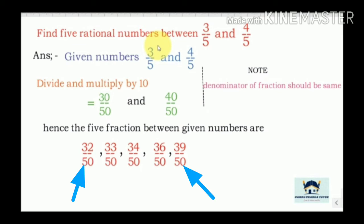Now let us take one more example. Find five rational numbers between 3/5 and 4/5. Using the same method, multiply and divide by 10/10: 3/5 × 10/10 = 30/50 and 4/5 × 10/10 = 40/50. Between 30/50 and 40/50 we can take any five fractions. We have taken 32/50, 33/50, 34/50, 36/50, and 39/50.